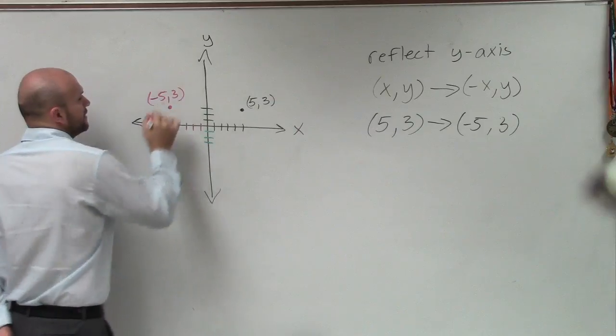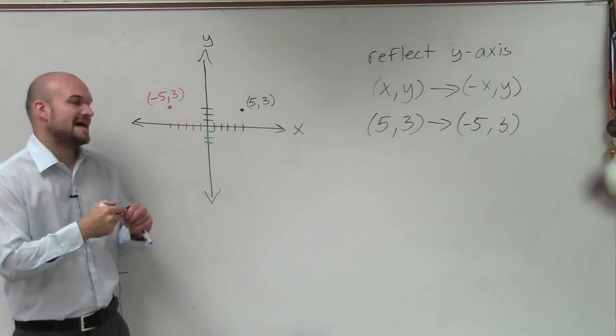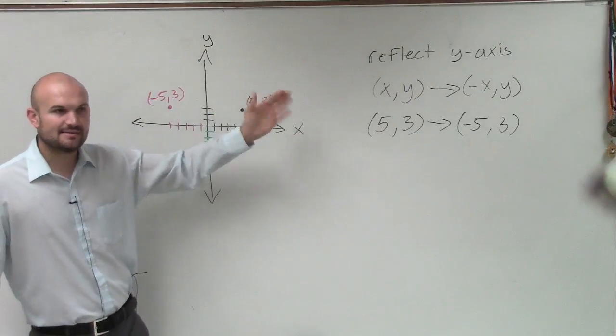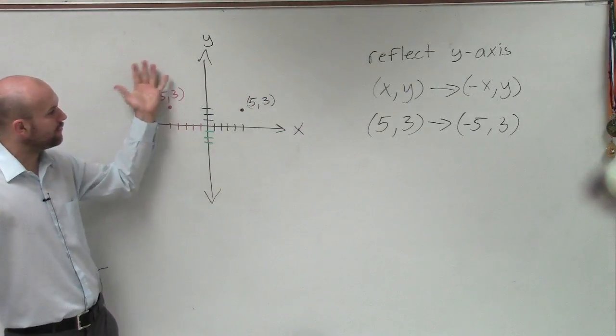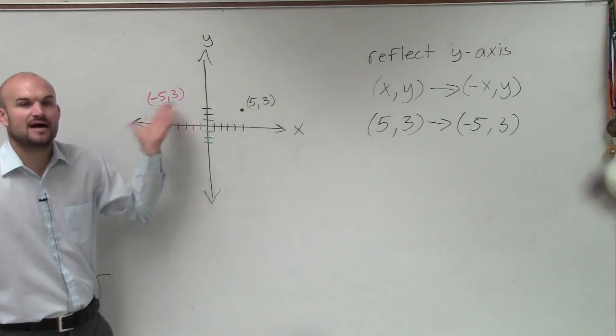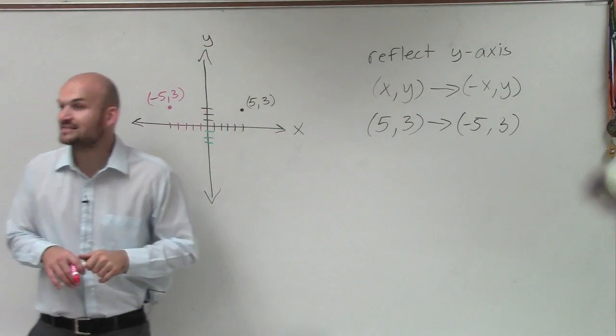Negative 5 comma 3. And you guys kind of see how this is the exact same point, but it has been reflected. Exact same kind of position, but a reflection over this y-axis. And the point is exactly the same, except now the x-coordinate is going to be reflected as negative.